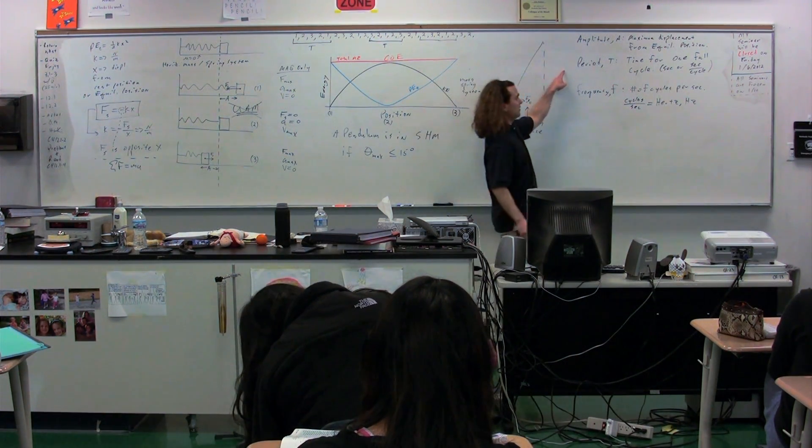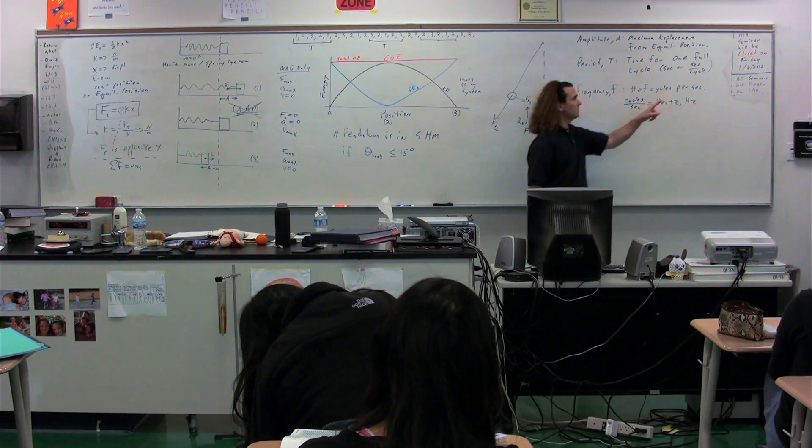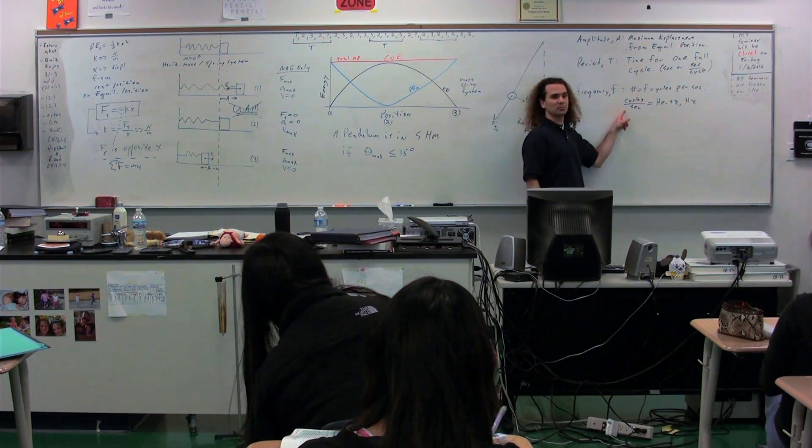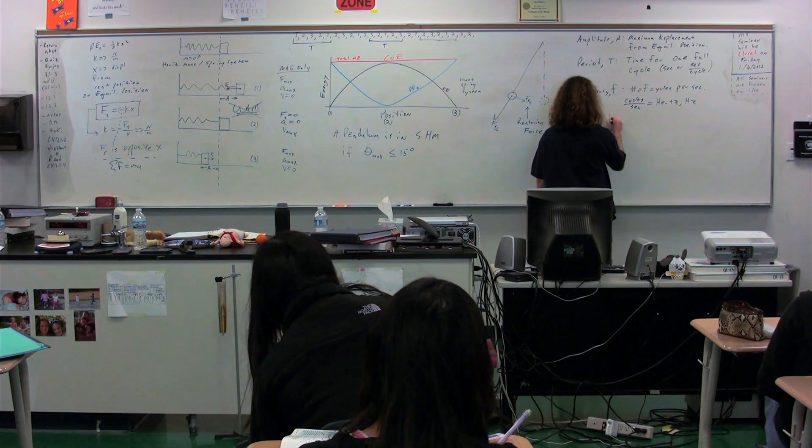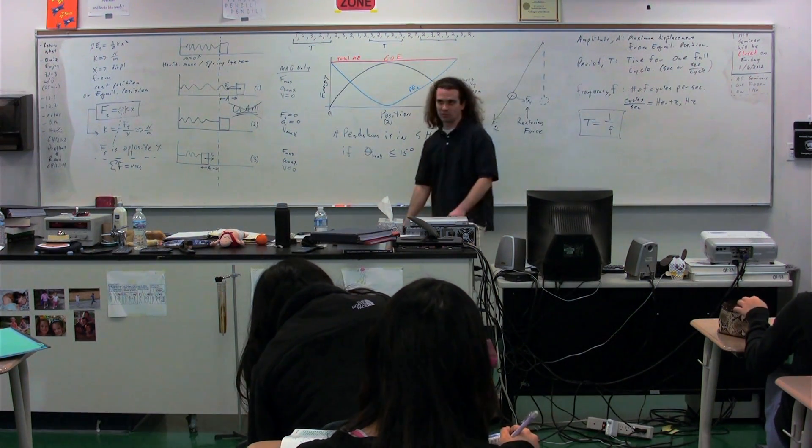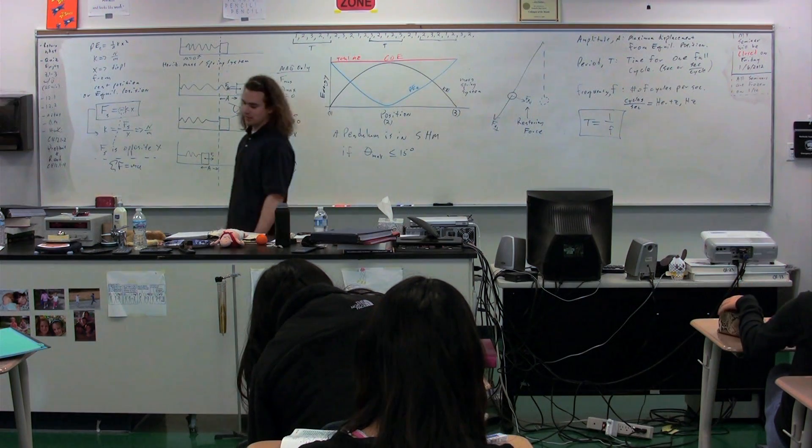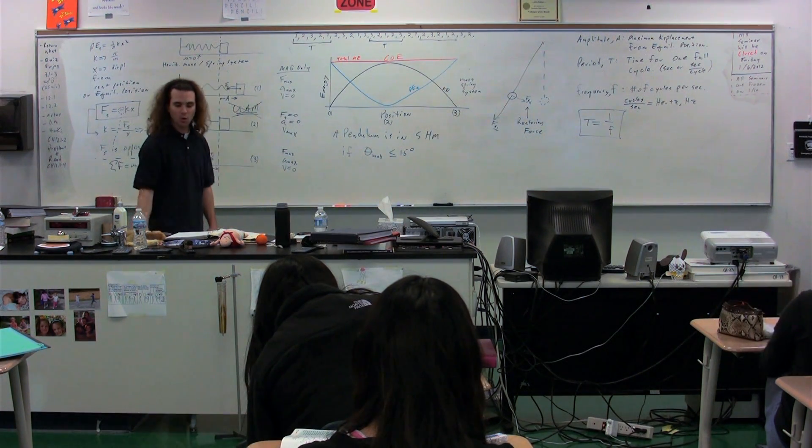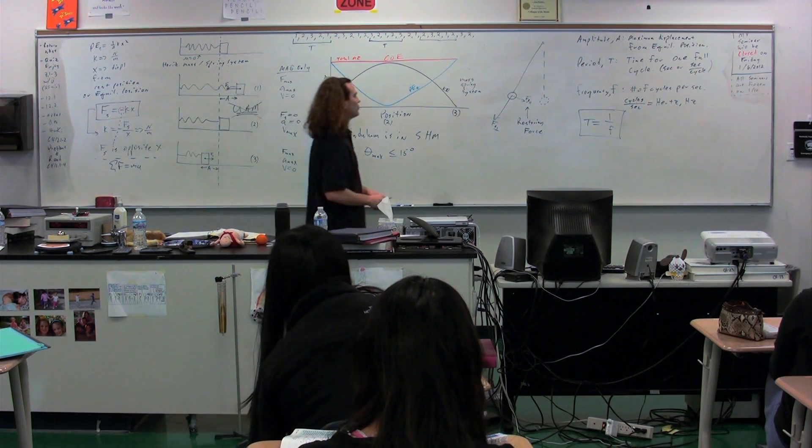So the period is in seconds per cycle. The frequency is in cycles per second. They are inverses of one another. So the period is equal to one over the frequency, and one over the frequency is equal to the period.